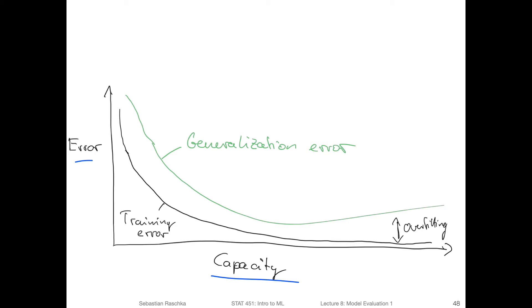Usually, in many contexts, in the context of parametric models like regression models, polynomial regression, and so forth, capacity also relates to the number of parameters or terms.